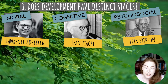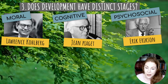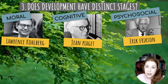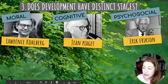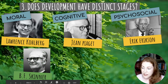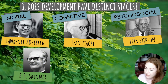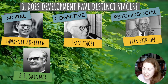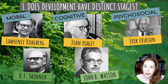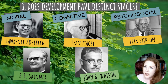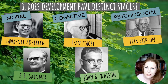There are two theorists who believe development is continuous, meaning there aren't specific stages in our development. The first is B.F. Skinner, who is a famous behaviorist, and the other is John B. Watson. Both believed that development was continuous, meaning there weren't specific stages that children developed at.